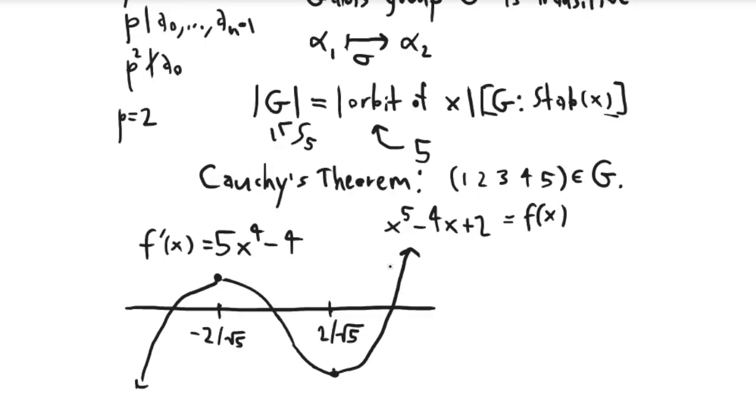And we know that it can't have more than three roots in R. Because if it had more than three roots, it would have additional turning points, and there's only two. So that's great. So this tells us that f has three real roots. And if it has three real roots, it has two complex roots.